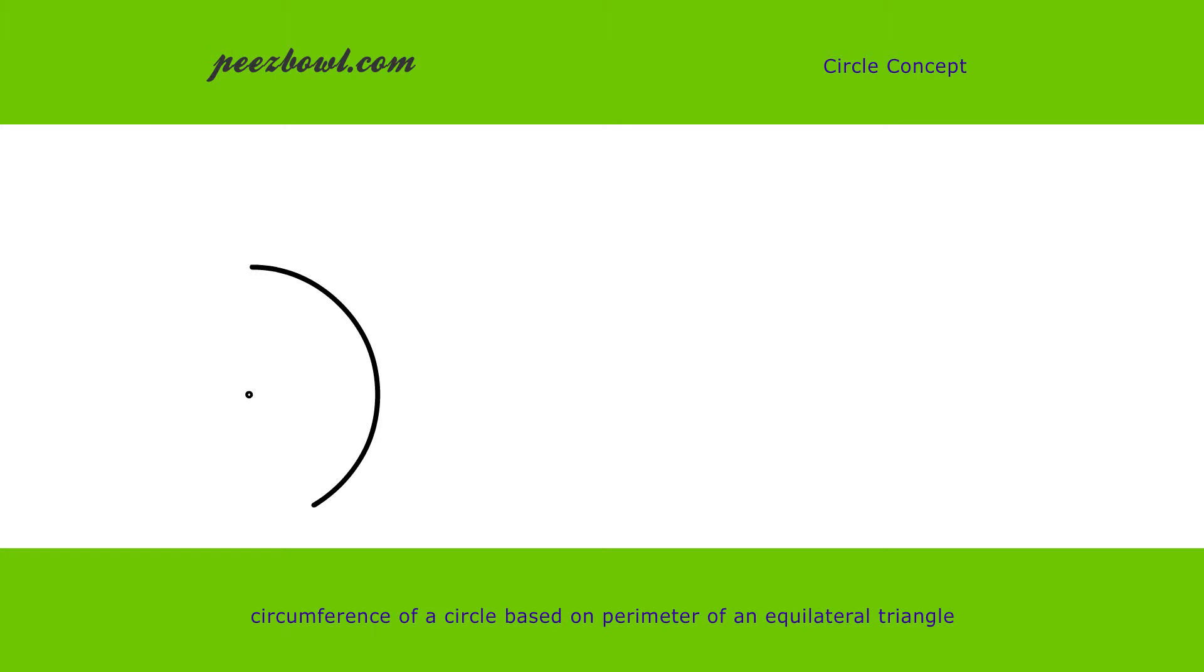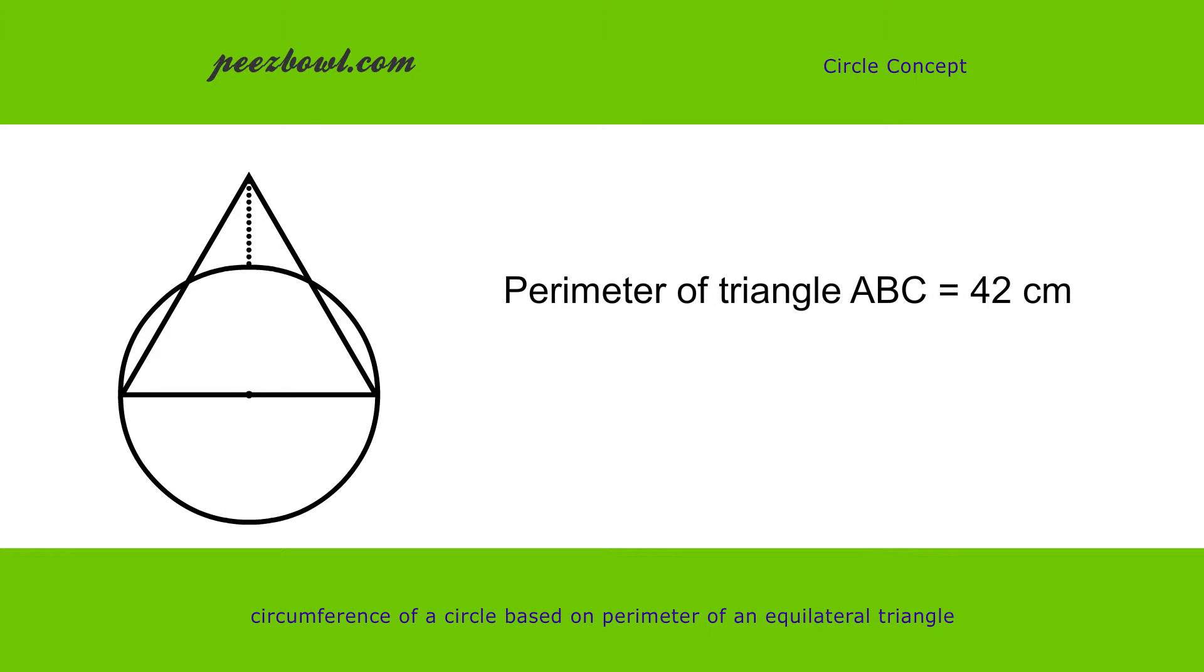See the diagram shown on your left. Perimeter of the equilateral triangle is 42 cm. Can you identify circumference of the circle?